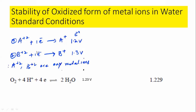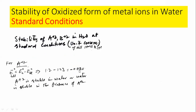So the cell potential is 1.2 minus 1.23 = minus 0.03 V. This means A²⁺ is stable in water, and water is also stable in the presence of A²⁺. We can also say that A²⁺ will form an aqueous solution, because it is soluble in water and both the metal ion and water retain their identities — that is why it forms an aqua solution.